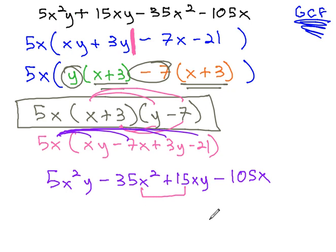The middle terms are in a different order, but they can be switched, because addition can happen in either order, and we see we've got the same thing we started with. This tells us our answer of 5x times x + 3 times y - 7 is the correct answer for factoring our problem.